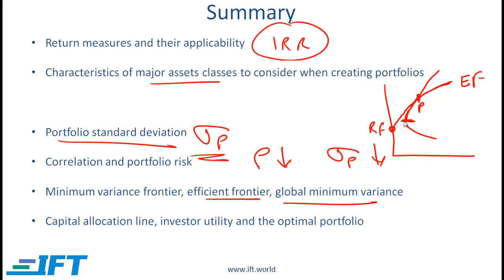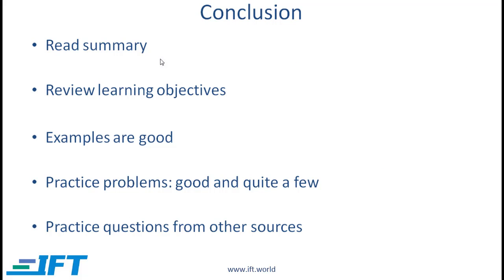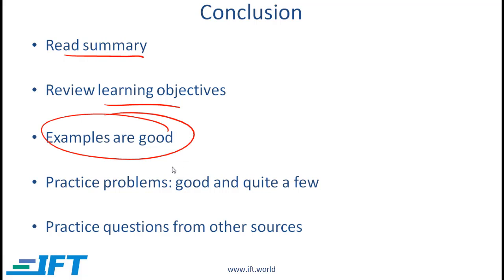The optimal risky portfolio is the tangency point on the efficient frontier. To come up with the optimal portfolio for an investor we need indifference curves and we must find the indifference curve tangential to the CAL. Please review the learning objectives, do the examples — they are good — and do the practice problems. There are quite a few, so make sure you spend time on them, and try to do questions from other sources as well if you have time.